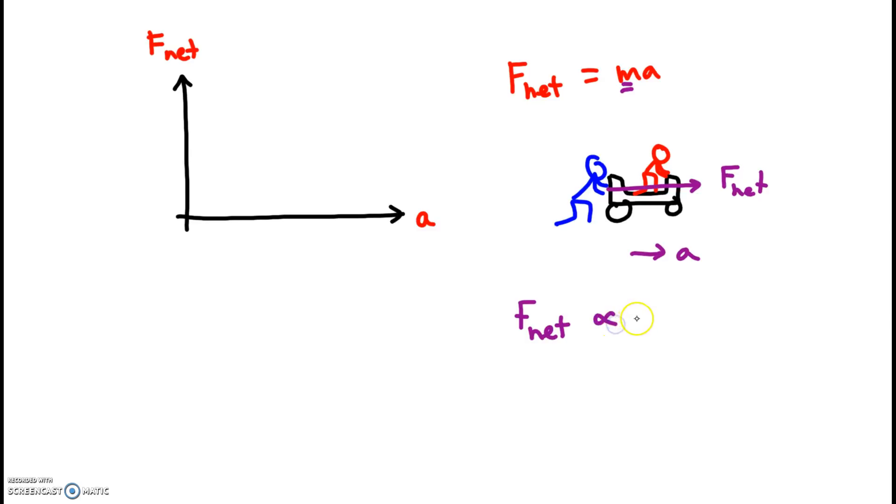And you're measuring how much does the cart accelerate. Now the mass is fixed. So what's the relationship going to be? We know this. It's a direct proportionality. This should be a straight line through the origin. Here's the data that you record because you're measuring the force. You're measuring acceleration. And every time you make a measurement, you can mess up. So here's the data that you get.